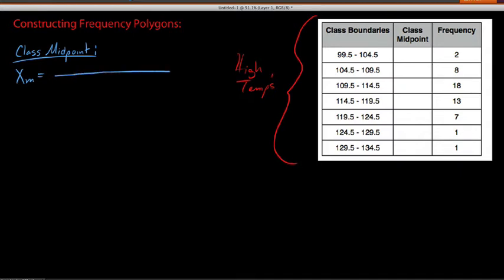And so, in terms of how to calculate a class midpoint, we would say lower boundary, now, we can use limit here. We can use lower limit, lower class limit. But we say lower boundary for the class, plus the upper boundary for the class.